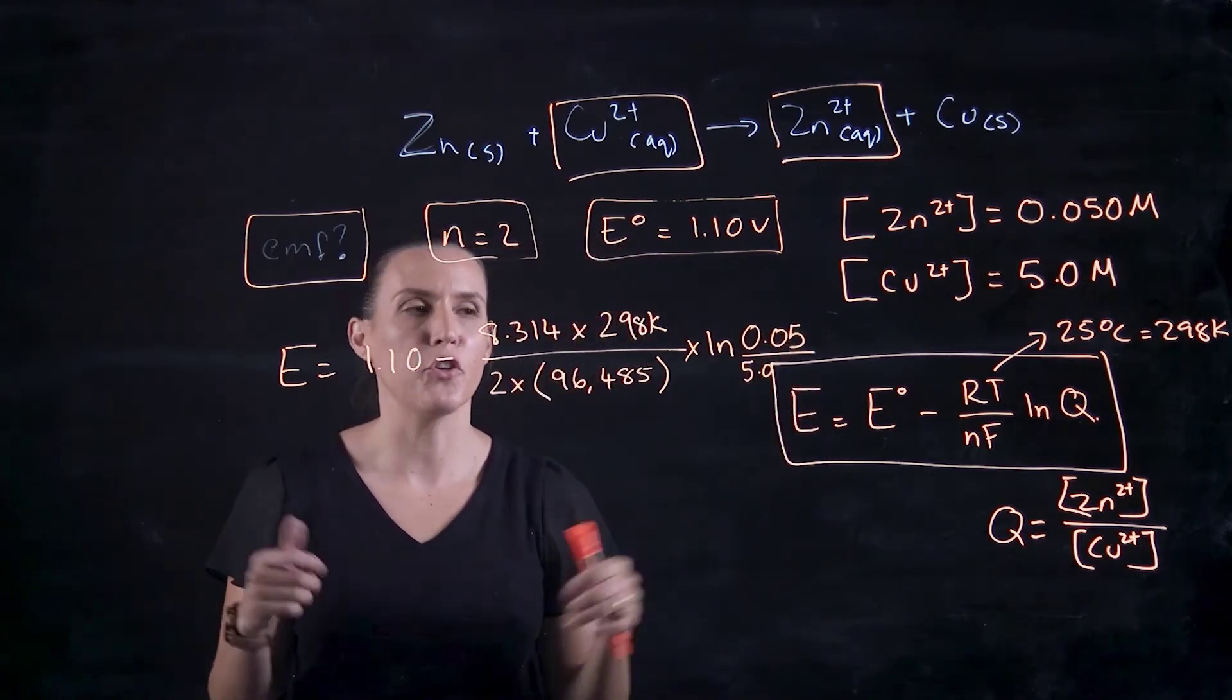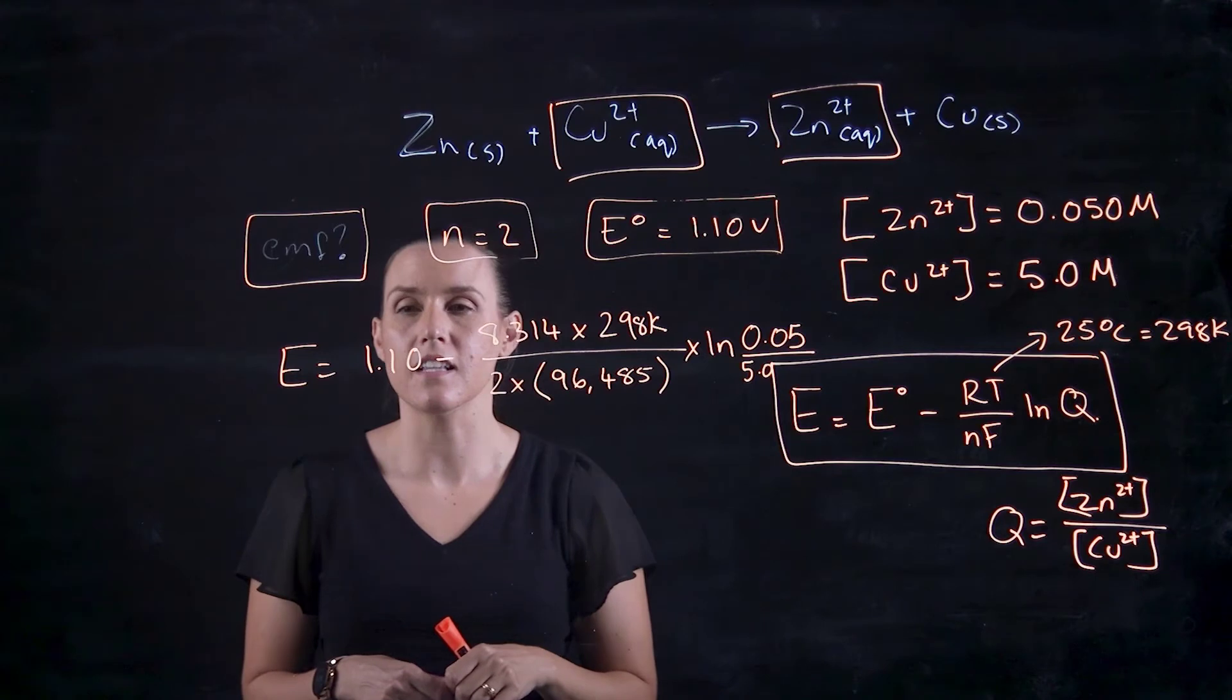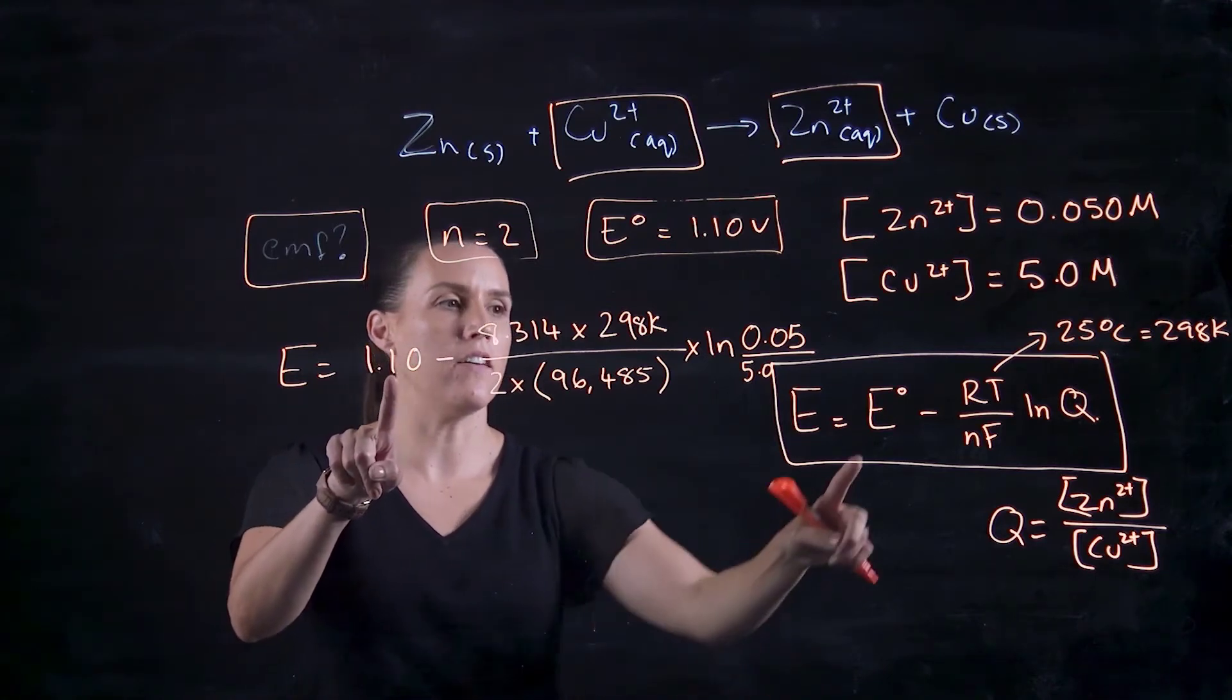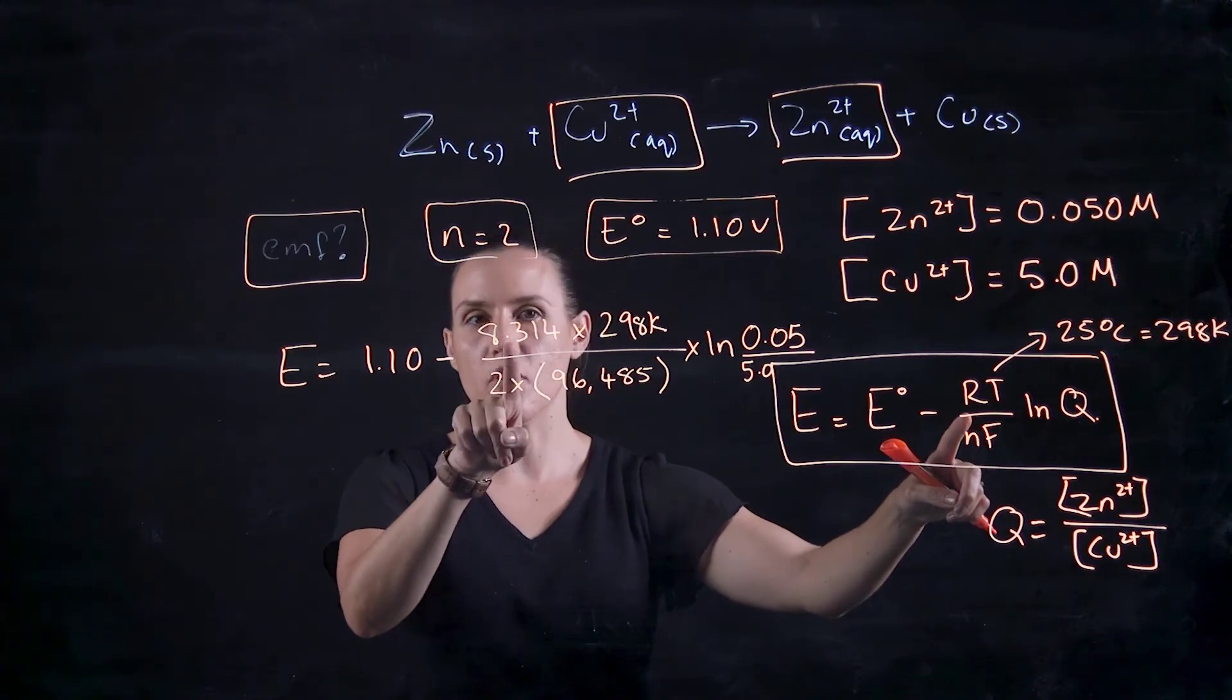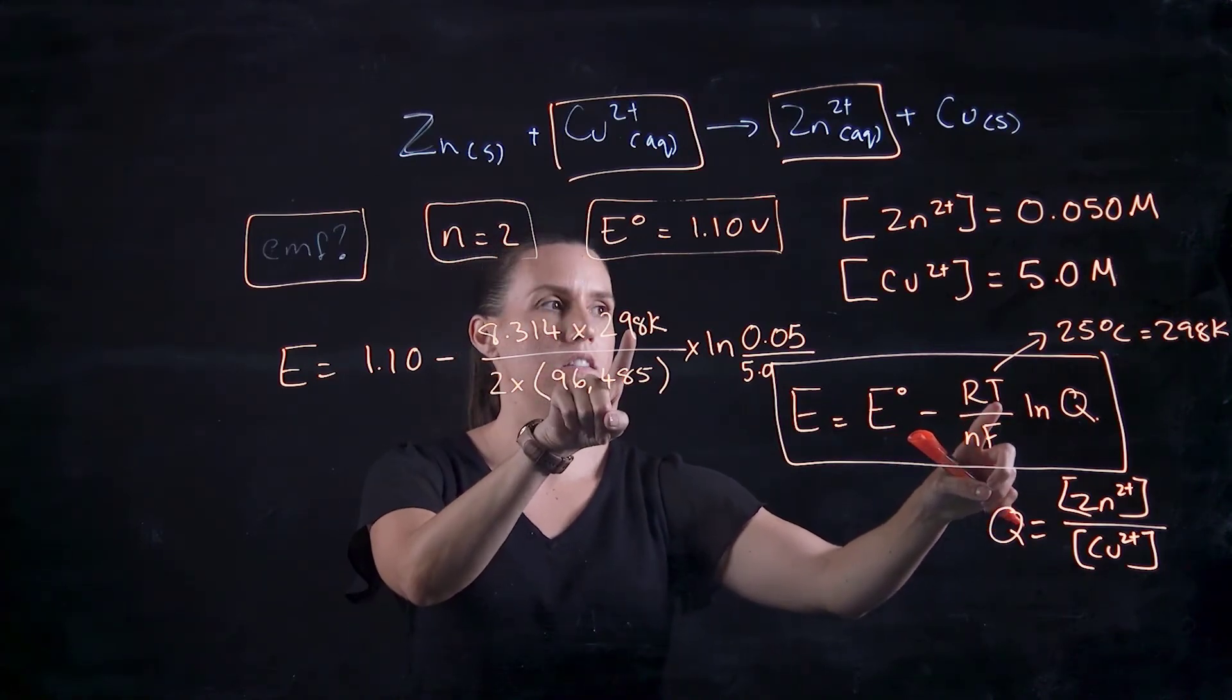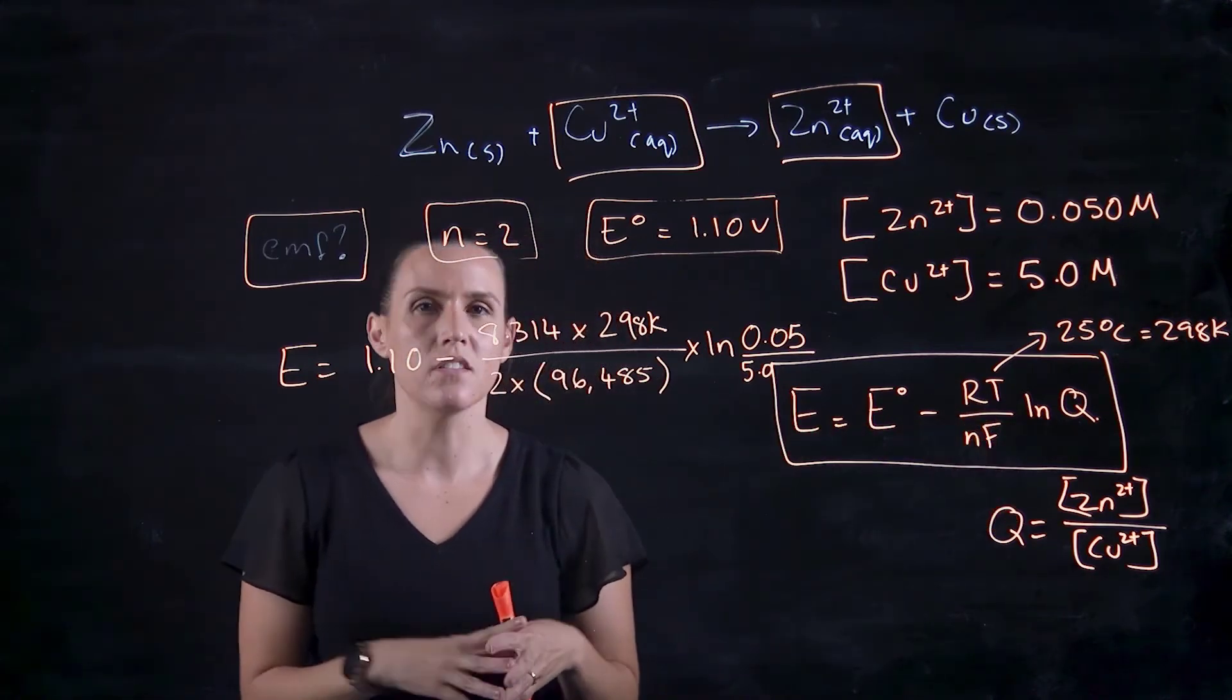Okay, ran out of room, but hopefully you can see this clearly enough. So our E0 is 1.1 volts, our R value is 8.314. Temperature, standard temperature is 298.